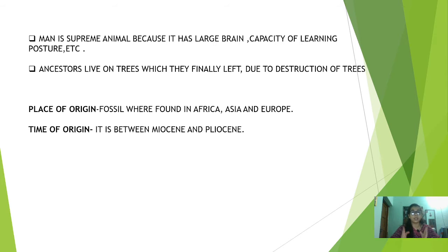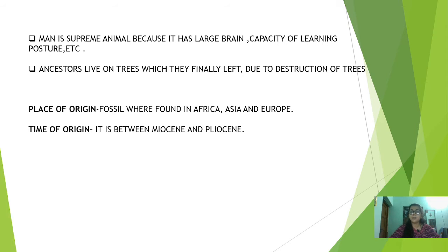You will be astonished to know that the ancestral form of man used to live on the trees. Yes, it is true. The ancestral form of man used to live on trees, and finally, due to the course of evolution, they left the trees and started living on the ground — and that is how the modern man evolved.